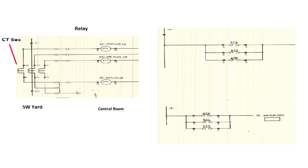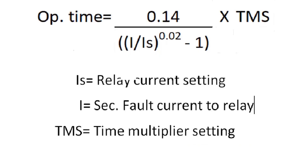In earlier days, they used three independent overcurrent relays and one earth fault relay, or two overcurrent relays and one earth fault relay — so three or four separate relays. For any fault, earth fault or phase fault, these combinations would operate depending upon the setting and the time multiplier setting. Once operated, contacts 1 and 2 are used for annunciation; contacts 3 and 4 are given to the tripping relay. Once the relay operates, 3 and 4 close, the command goes to the tripping relay, the tripping command goes to the breaker, it trips the breaker, and the relay resets. This is the principle used in overcurrent relay protection.